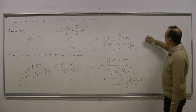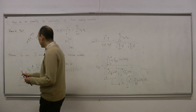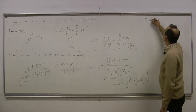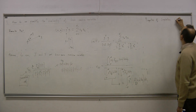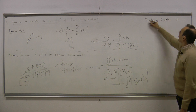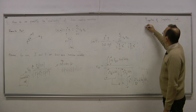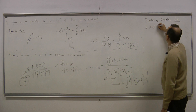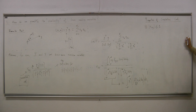Now let me write some properties of the correlation coefficient. Property one: rxy in magnitude is less than 1.